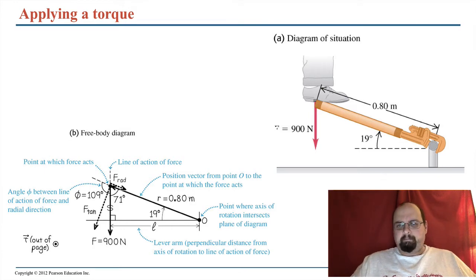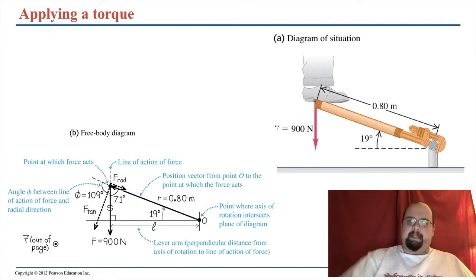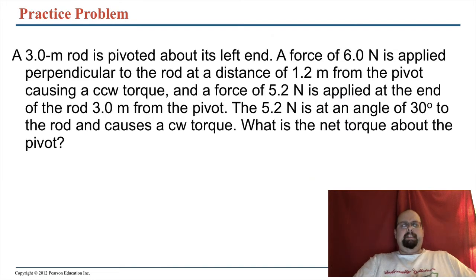So here we've got this 900 newton force pressing straight down. Someone's stepping straight down on the thing. And the angle between the horizontal and this wrench, this is a pipe wrench here, is 19 degrees. But the angle between the force and R, here's R here, is actually 71 degrees. It's that other angle. What do you call that? I can't remember. It begins with the letter C. Oh well. Geometry terms don't matter too much.